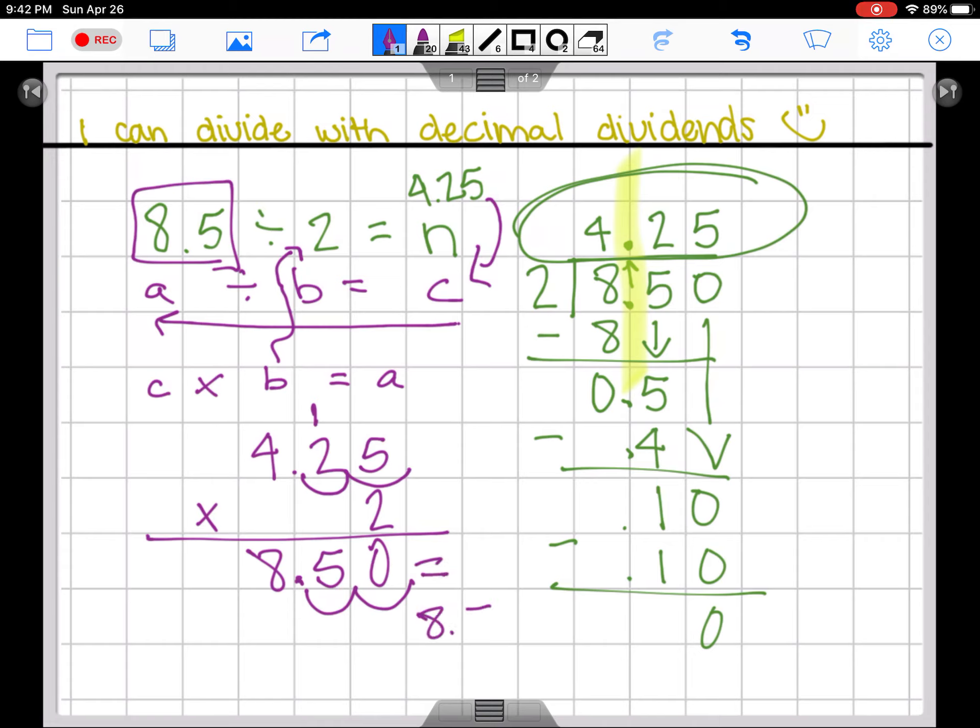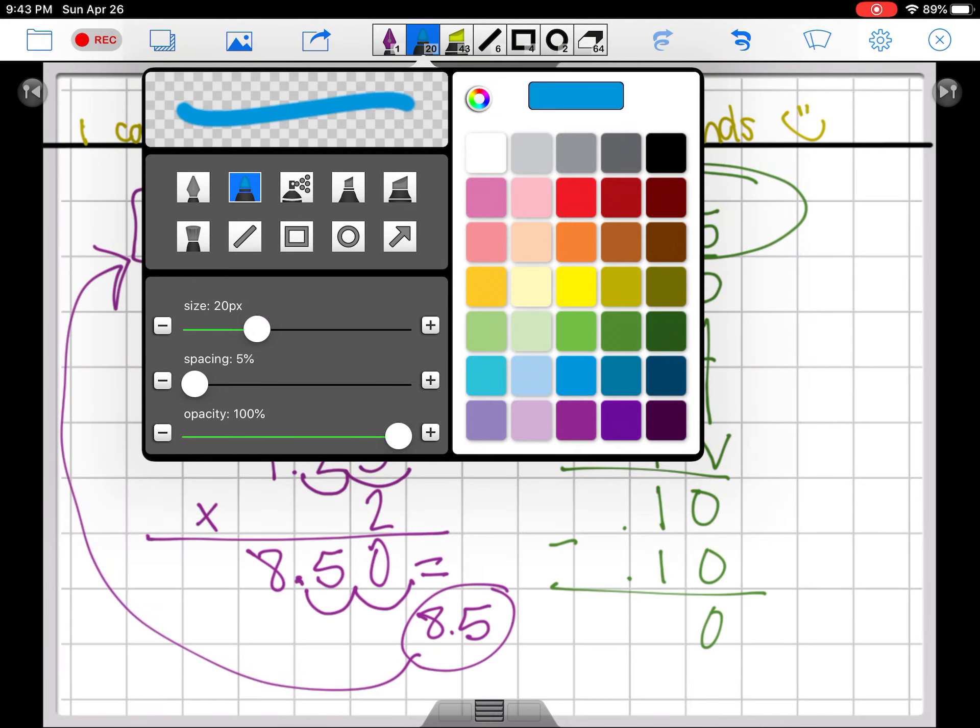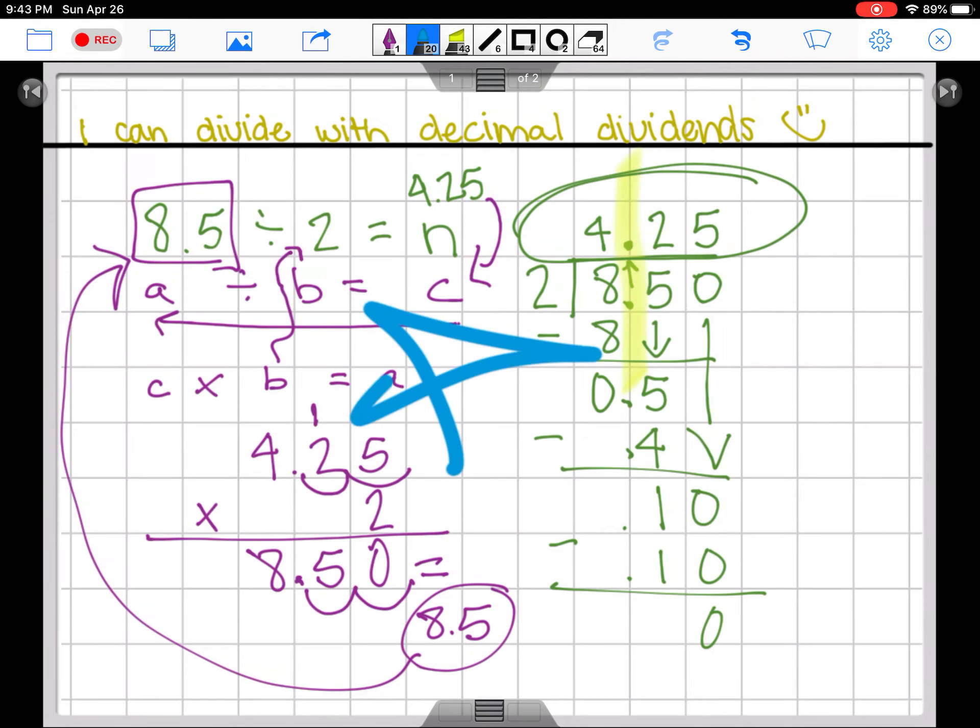So when we put our decimal in, we get 8.50. We know that 8.50, or eight and fifty hundredths, is equal to 8.5, or eight and five tenths. Those are equivalent decimals. So we can celebrate that we checked our work properly. Excellent job, very nice. Beautiful, beautiful.